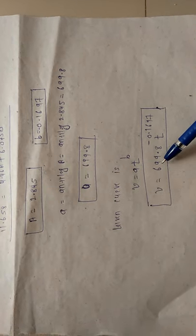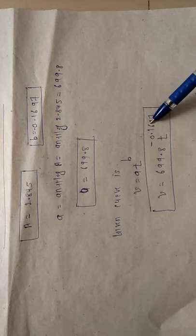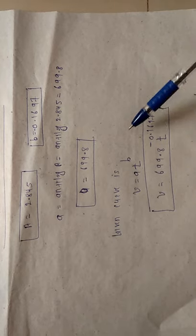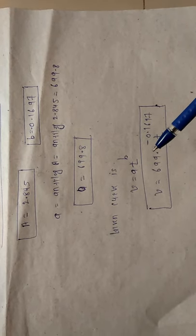After finding the values of A and B, put them into the required curve. You will get V is equal to the value of small a times T to the power of the value of B. This is the required solution.